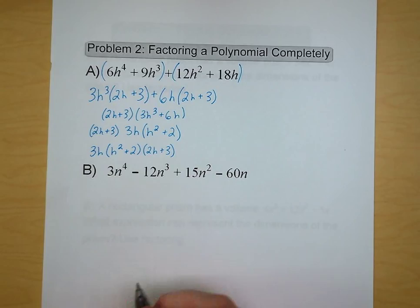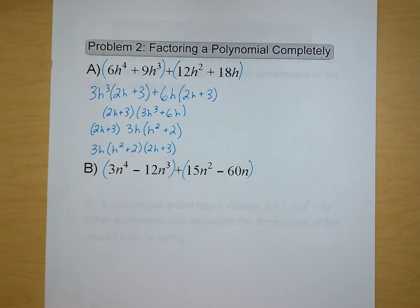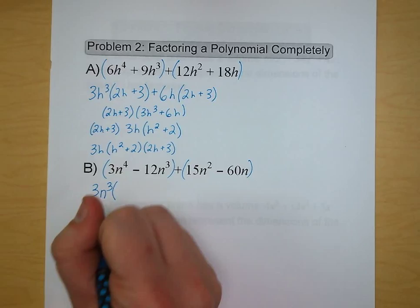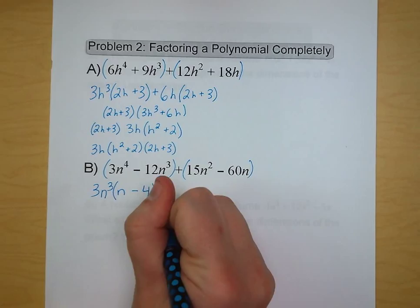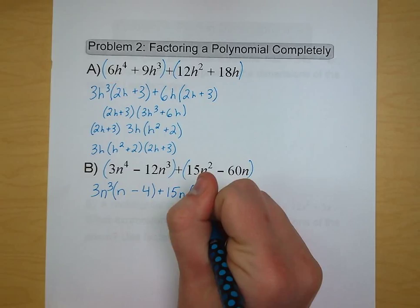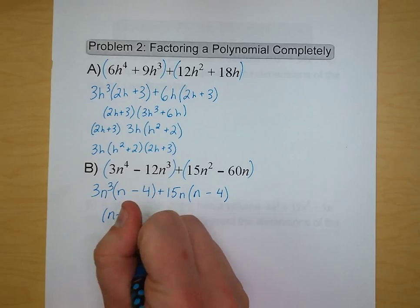Moving on to letter B. We have 3n to the 4th minus 12n cubed plus 15n squared minus 60n. We draw our parentheses in and now we're going to factor out our common terms. We can take out 3n cubed from the first group and we're left with n minus 4. In our second term we can take out 15n, and we're left with n minus 4. So we have a common term again — it's the n minus 4. And we're left with 3n cubed plus 15n.